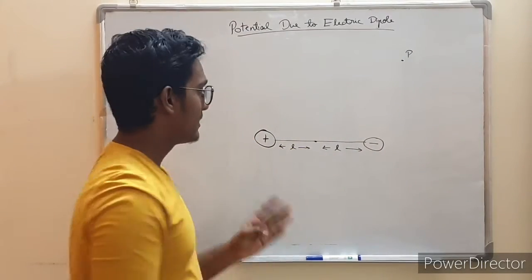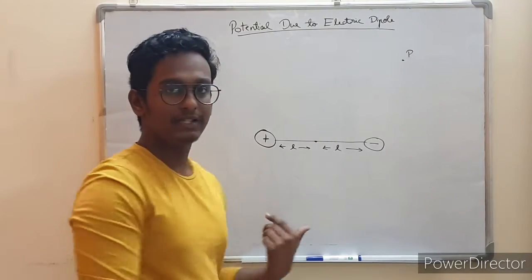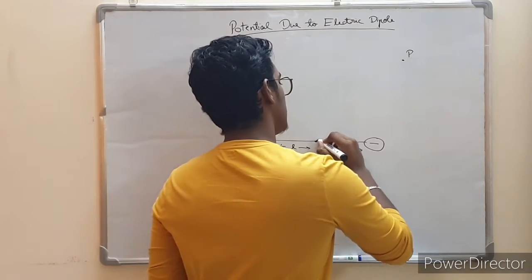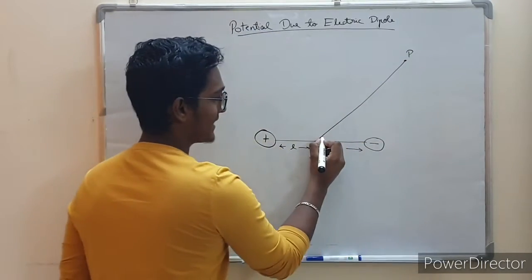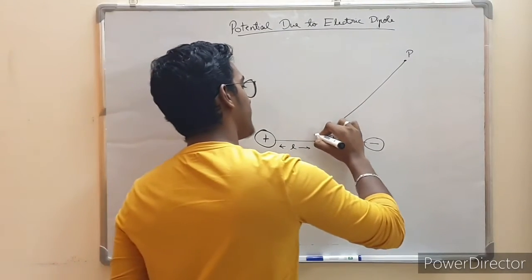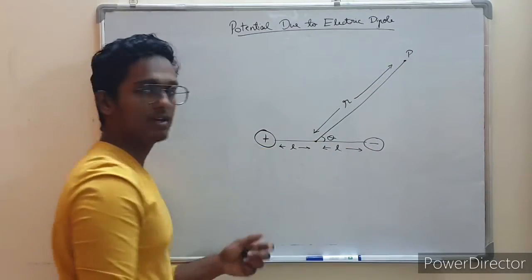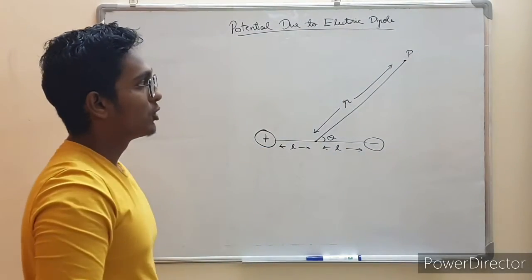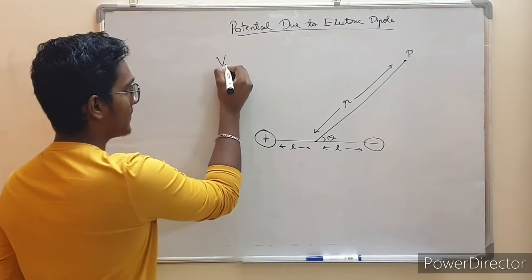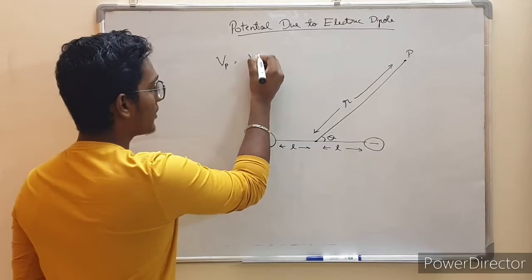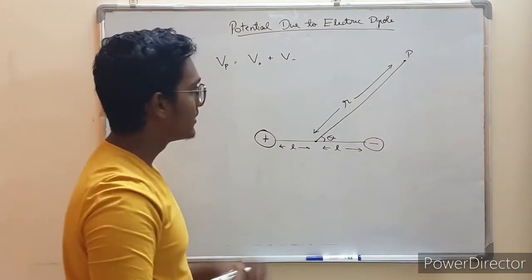We need some more quantities for the derivation: the angle that the line joining point P to the center makes with the dipole axis is theta, and the point is at a distance r from the center of the dipole. To find the effective potential at point P, it equals the potential due to the positive charge plus the potential due to the negative charge. We find the individual potentials and add them up.